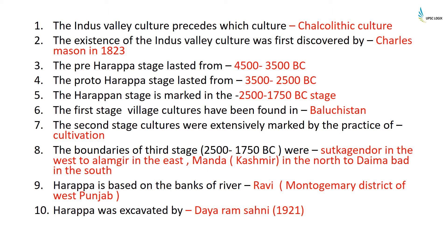The first stage village culture has been found in Baluchistan. The second stage culture was extensively marked by the practice of cultivation. The boundaries of the third stage, that is the Harappan stage, were Sakta Jender in the west to Alamgir in the east, and Manda in Kashmir in the north to Daimabad in the south.